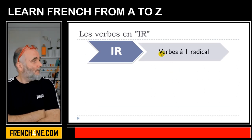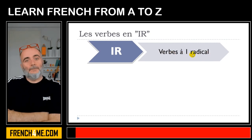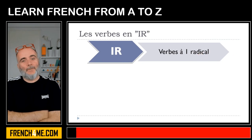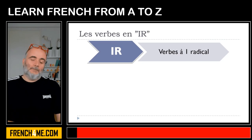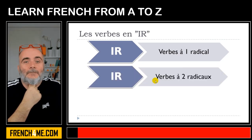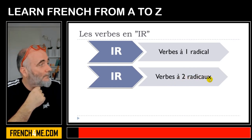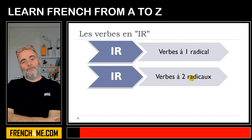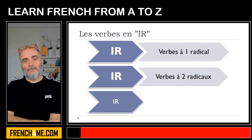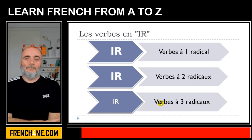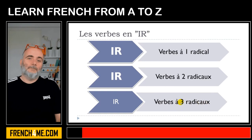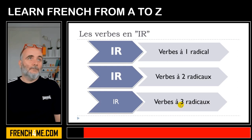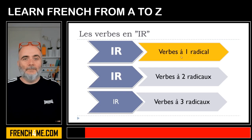The first one will be what we call les verbes à un radical — radical is the stem, the root — and these ones are quite easy to conjugate. The second group is les verbes à deux radicaux, so now it's getting a bit difficult because it will mean that these verbs will have actually two stems or roots. And then the third group — les verbes à trois radicaux — they are the most tricky ones, but we'll manage to understand how it works. So let's start with the easy thing: les verbes à un radical.